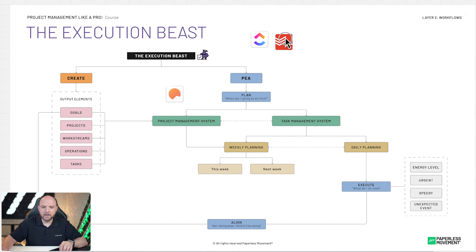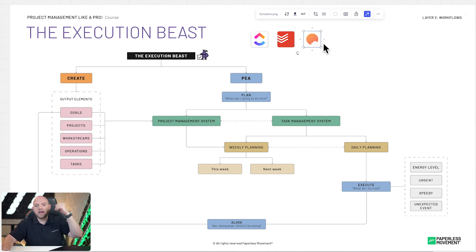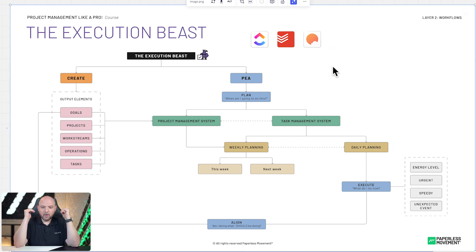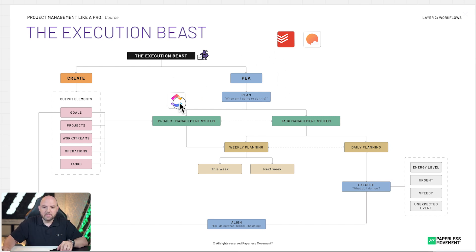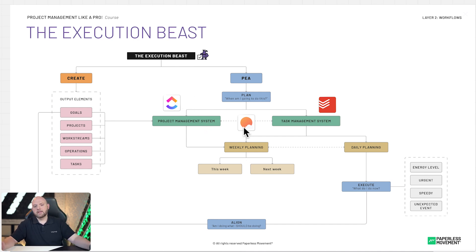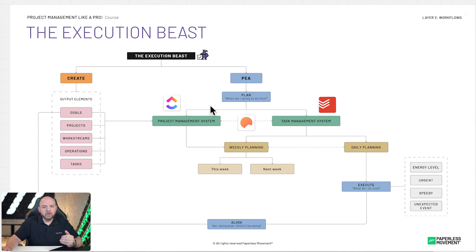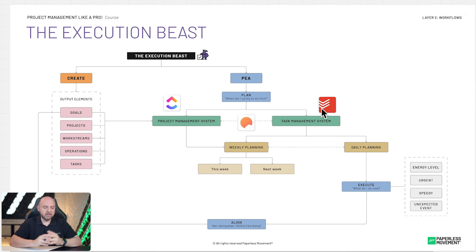The tools we use at the Paperless Movement are three: a project management system, a task management system, and a planner. It doesn't matter if you use TickTick, Acuflow, or others — the idea always works. It's not the tool that makes you productive; it's the tool-agnostic concepts and workflows you use within those tools. For us specifically: ClickUp is the project management system, Todoist is the task management system, and Sansama is the planner. ClickUp tasks sync into Sansama — or you can do it manually.